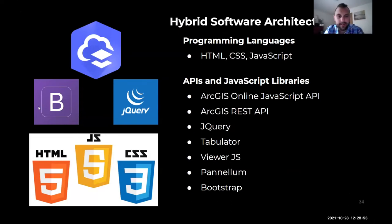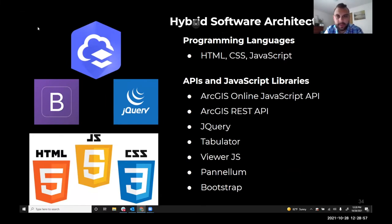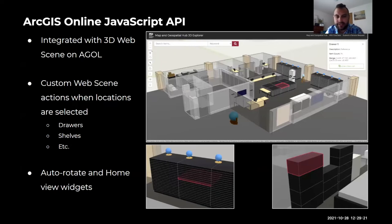Thank you, Matt. I'm going to talk about the underlying architecture that made this application possible. We used HTML, CSS, and JavaScript as our main programming languages, along with several APIs and JavaScript libraries: the ArcGIS Online JavaScript API, ArcGIS REST API, jQuery, Tabulator, ViewerJS, Pannellum, and Bootstrap. The ArcGIS Online JavaScript API is one of the main APIs we used — it integrates with our 3D web scene that Eric created on ArcGIS Online. It provides custom actions when locations are selected, such as drawers or bookshelves — for example, clicking the 'View Item List' button in the drawer pop-up. It's also responsible for our auto-rotate view widgets, which were custom programmed in JavaScript.